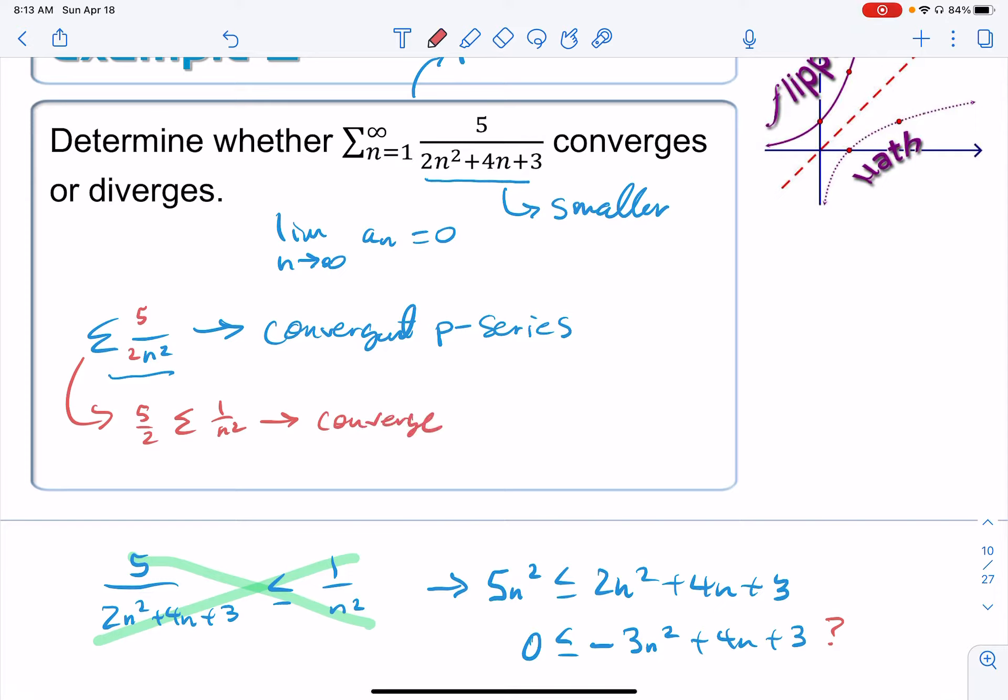Does that make sense? If this is convergent and we just multiply it by 2.5, this is some sort of finite number that it reaches. And we're multiplying it by 2.5, it's still going to converge. So let's see if we can compare it to this one now.